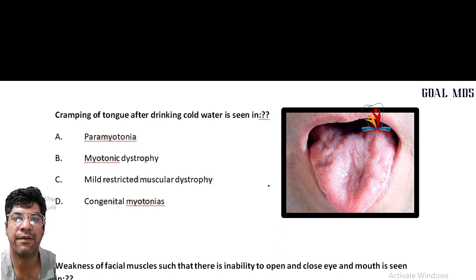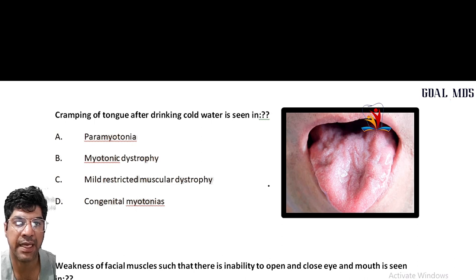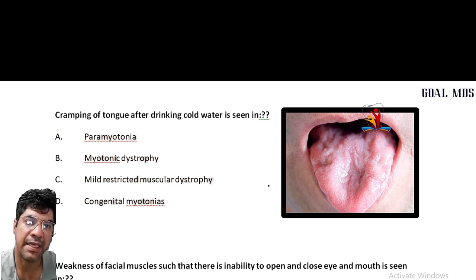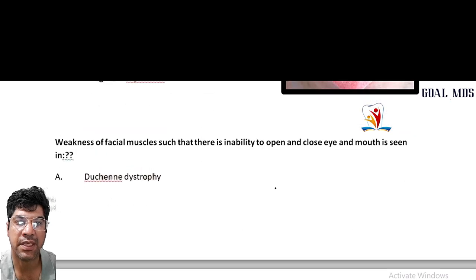Cramping of tongue after drinking cold water is paramyotonia — a disorder associated with muscle stiffness and prolonged muscle contraction. Cold temperature can increase myotonic symptoms in individuals with this condition.